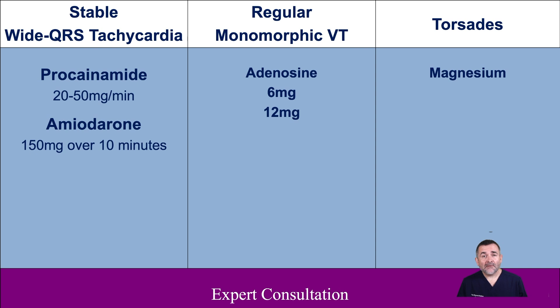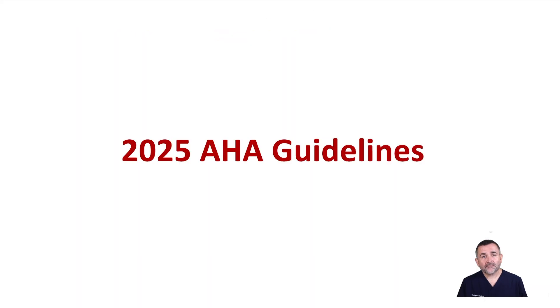Take note that sotalol is not part of the 2025 AHA guidelines. For torsades, magnesium is an option. For more information, please review the 2025 AHA guidelines — the link is in the description below.